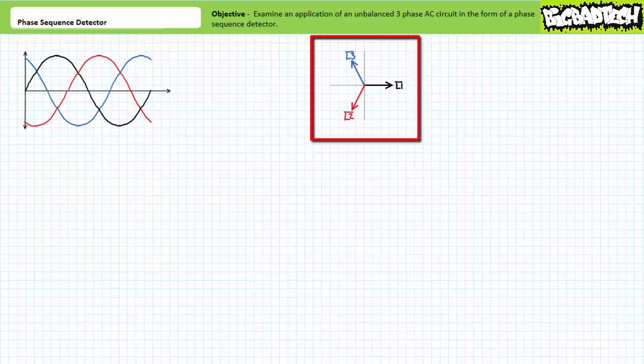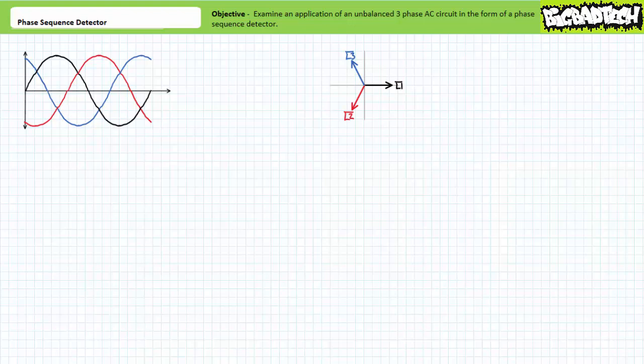Represented as phasor equivalents with phase L1 assumed to be the reference, L1 in black would be 120 volts at an angle of zero degrees, L2 in red would be 120 volts at an angle of negative 120 degrees, and L3 in blue would be 120 volts at an angle of 120 degrees. Several equally relevant observations can be made using either the plot of voltage as a function of time or the phasor representation. It can be said L2 lags L1 by 120 degrees just as easily as it can be said L1 leads L2 by 120 degrees.